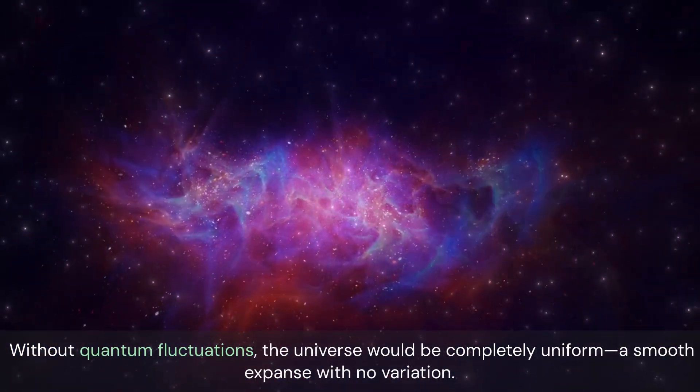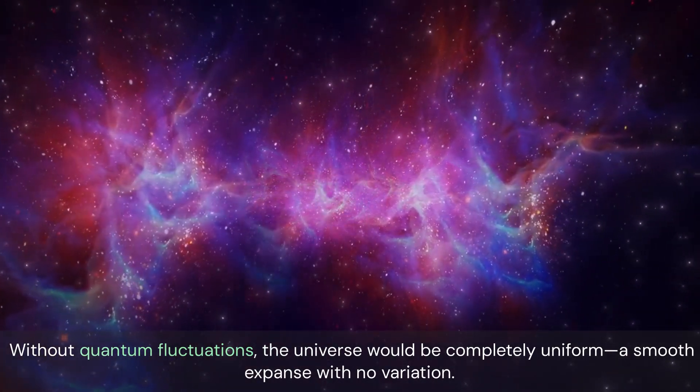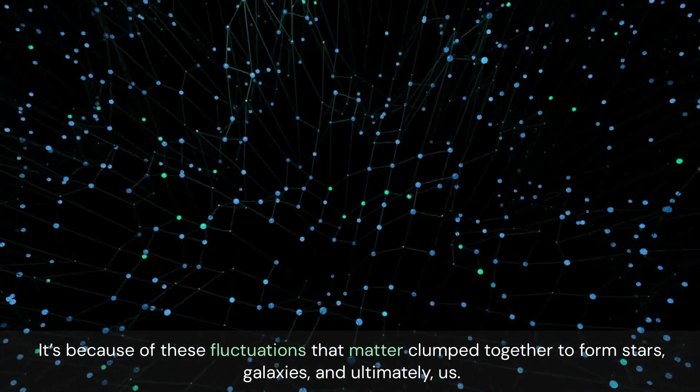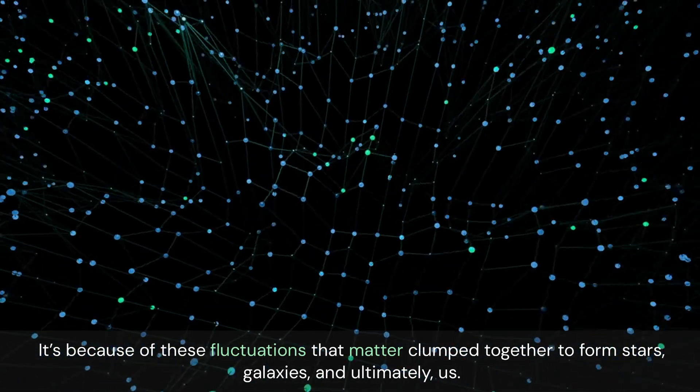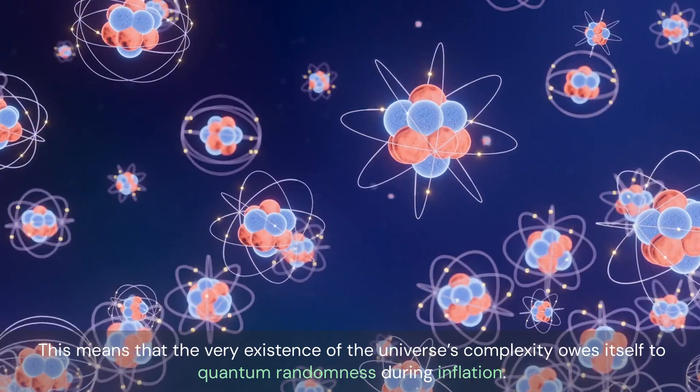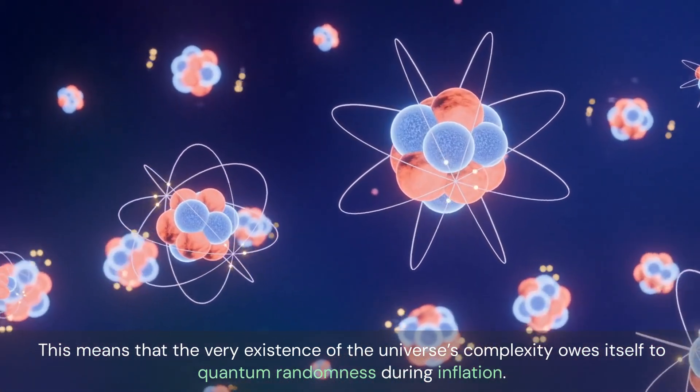Without quantum fluctuations, the universe would be completely uniform, a smooth expanse with no variation. It's because of these fluctuations that matter clumped together to form stars, galaxies, and ultimately, us. This means that the very existence of the universe's complexity owes itself to quantum randomness during inflation.